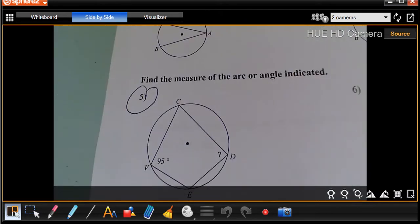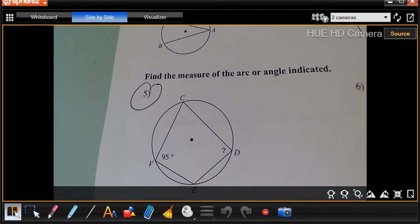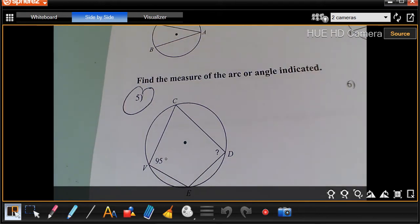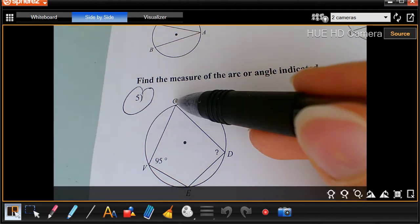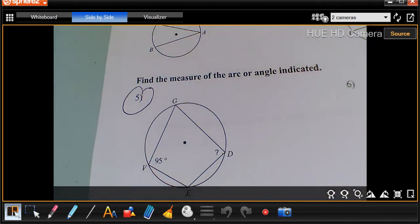For number five, remember inscribed angles are half what the arc is. So that's very important when we're doing this. We want to know what this angle right here is, CDE. That is what we're trying to find.